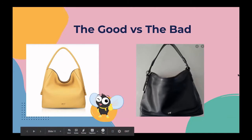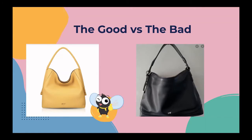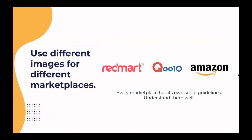Now I'll go into more specific technical details on different marketplaces — focusing on RedMart, Quten, and Amazon. RedMart and Quten are Singapore-based marketplaces, with RedMart more focused on supermarket products. Amazon, of course, most of us are familiar with. The reason I'm selecting these three is that they have different image guidelines. The general concepts will apply to marketplaces in your own country, so take this as a generic guideline for whatever marketplace you're selling on.